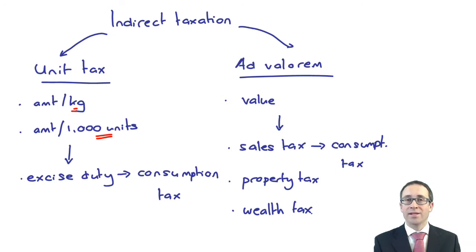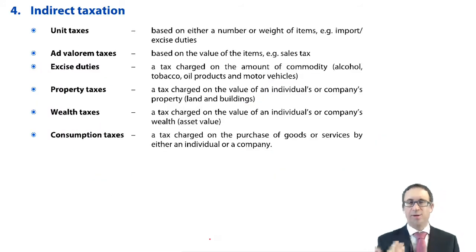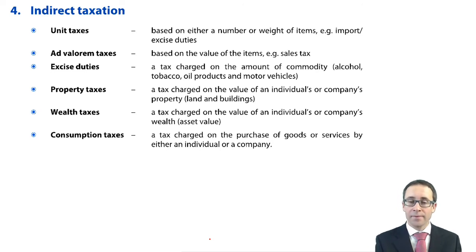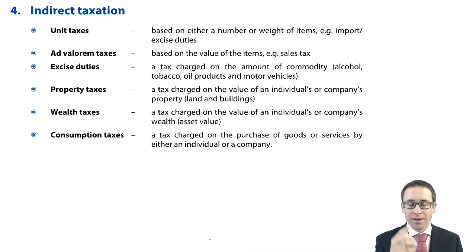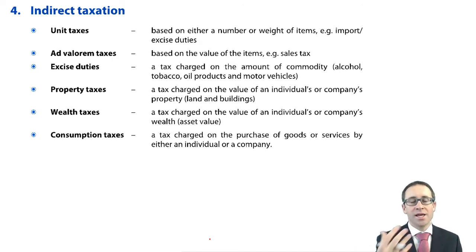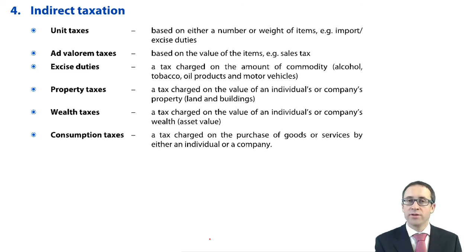So that's a brief introduction in terms of what indirect tax is. It's bits and pieces that you need to learn, because objective test questions could ask: excise duty is an example of which types of tax? It is an indirect tax, it is a consumption tax, and it is a unit tax. Similarly, a wealth tax is an example of which of the following — it is indirect, it's not a consumption tax because you are not purchasing goods or services, but it is an example of an ad valorem tax.